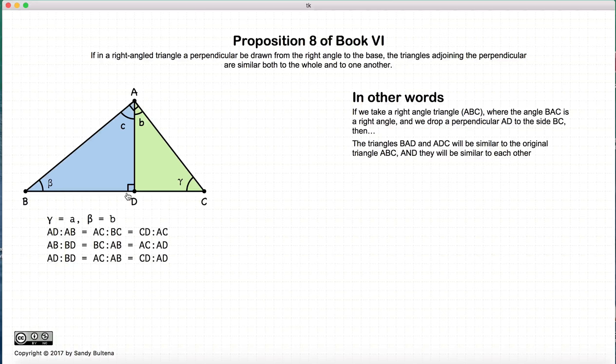And this proposition states that the original triangle ABC and the two subsequent triangles ABD and ADC are all similar to one another. And that implies that they're all equal angular. So in other words it would imply that B is equal to beta and C is equal to gamma, and that these relationships all hold.